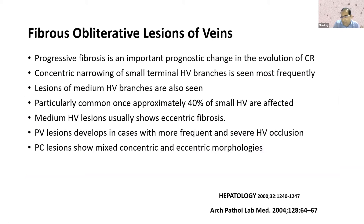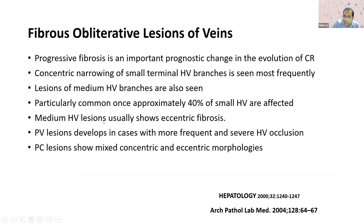Apart from that, which is very less talked about in chronic rejection — if you study the retransplanted explants — there are fibro-obliterative lesions of the veins. It affects hepatic veins as well as portal veins. Most commonly, small hepatic vein branches — terminal hepatic vein branches — are involved. But later, as there is stasis and thrombosis, you will see involvement of medium-sized and even larger hepatic veins with fibro-obliterative changes. They can show eccentric or concentric fibrosis, and they can also show recanalization, indicating there is stasis and thrombosis.